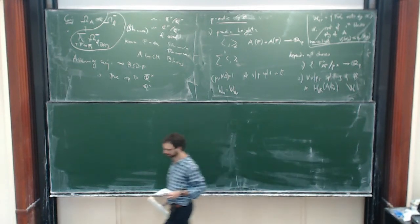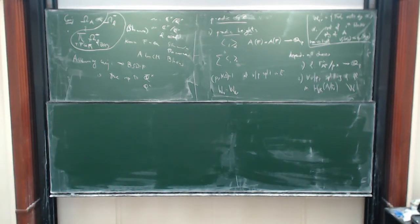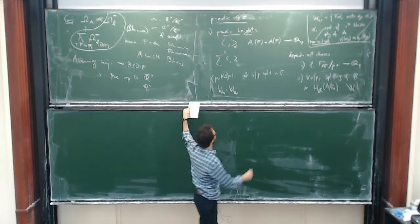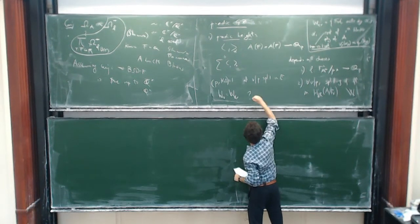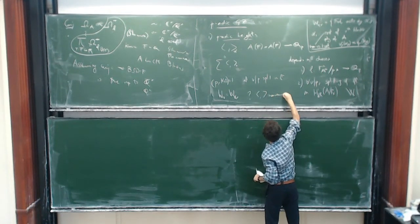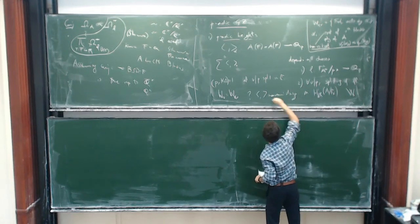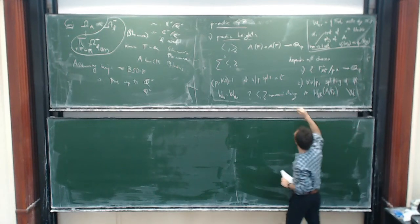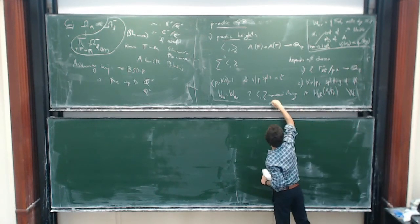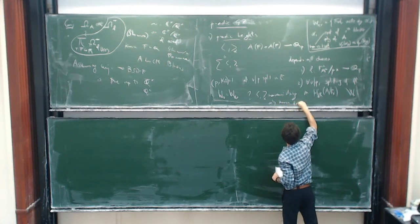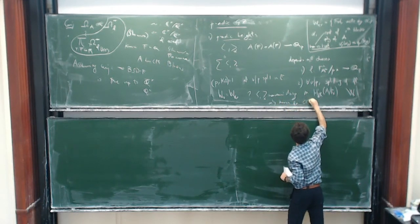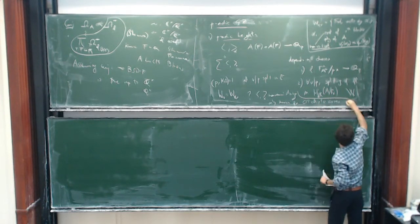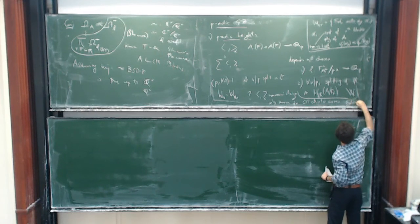I should mention the most important property of the p-adic height — which is a negative property — which is that we don't know that it is non-vanishing. For all we know, except of course that you can compute it, it could be identically zero. It is only known for CM elliptic curves.